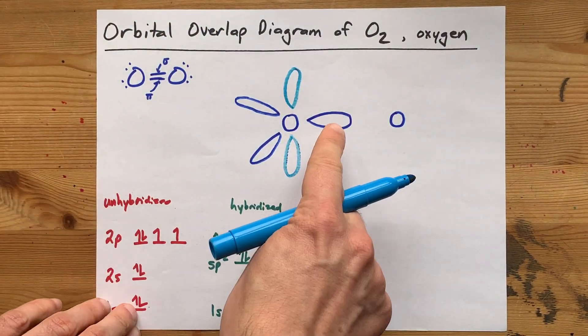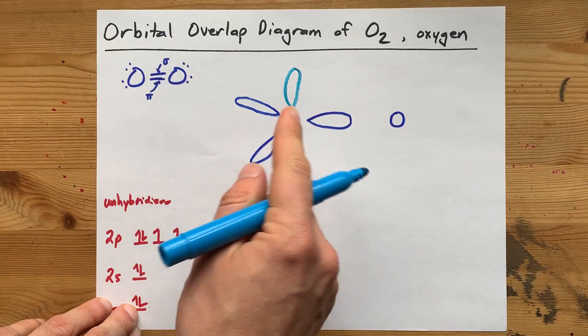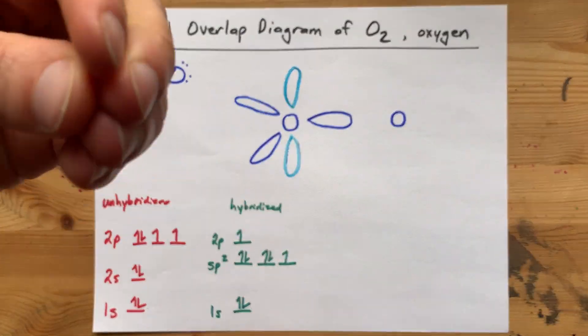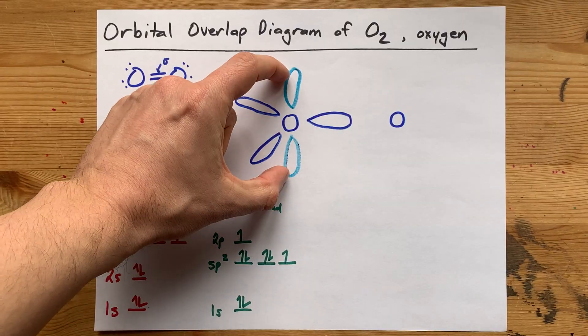The hybridized orbitals, 1, 2, 3, only get one balloon each. A 2p orbital gets above and below.